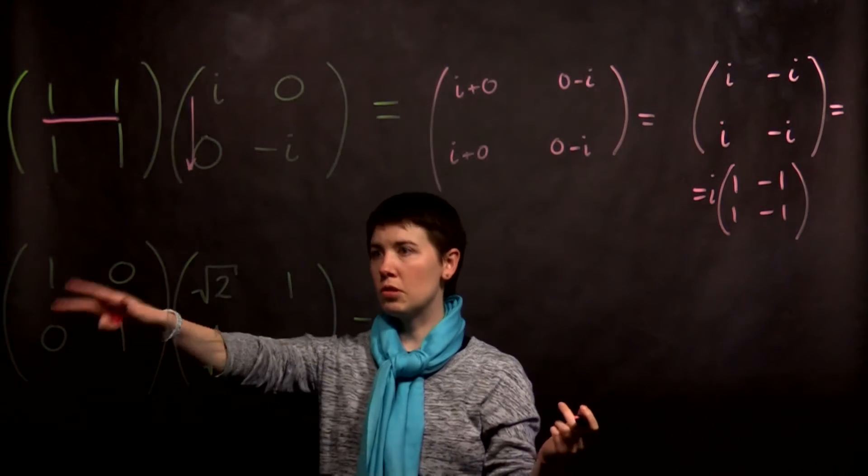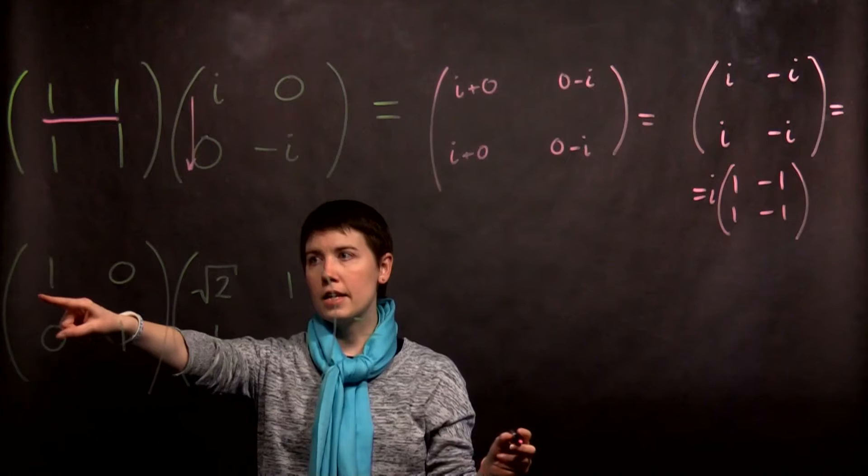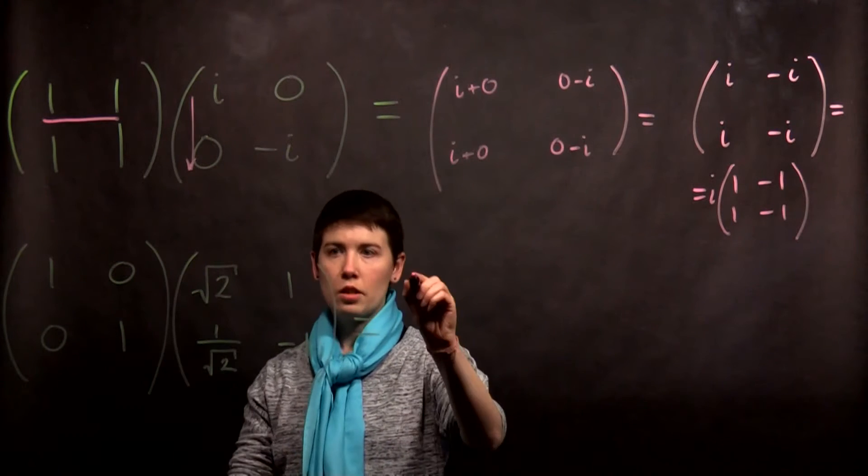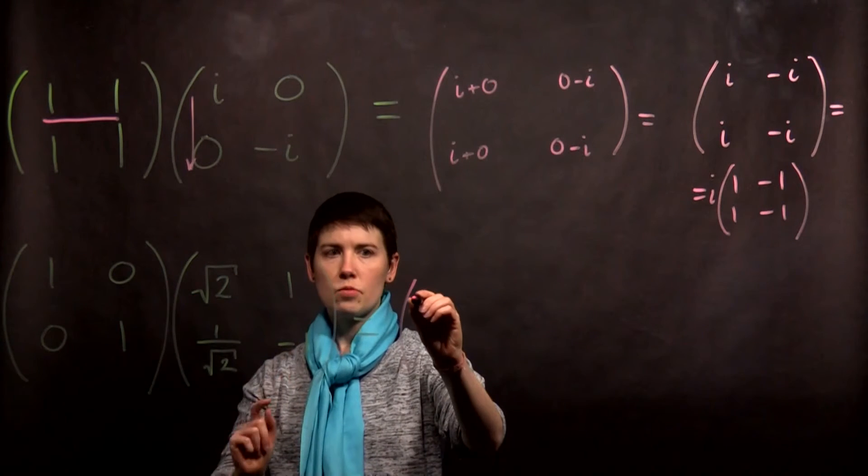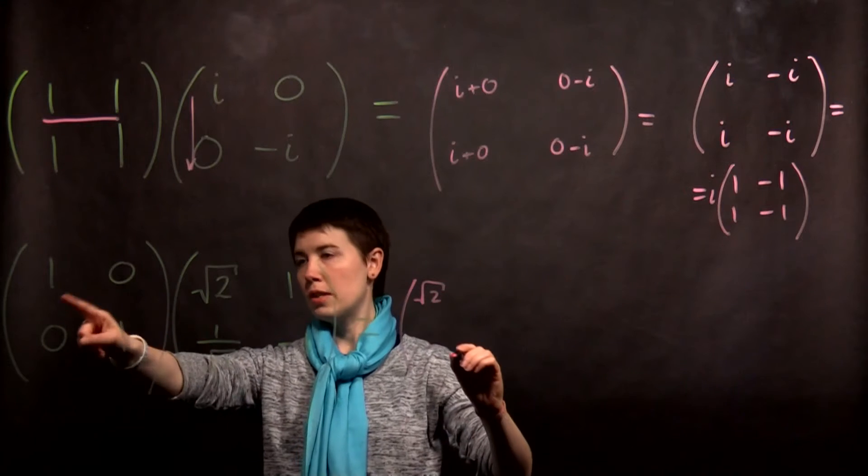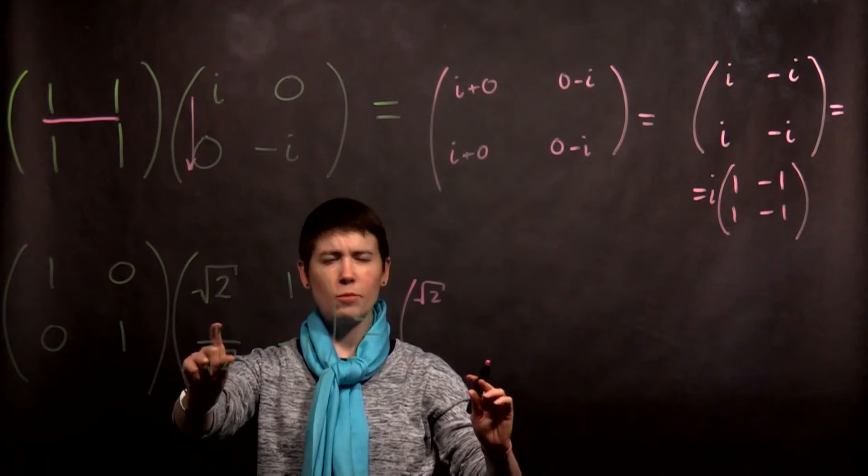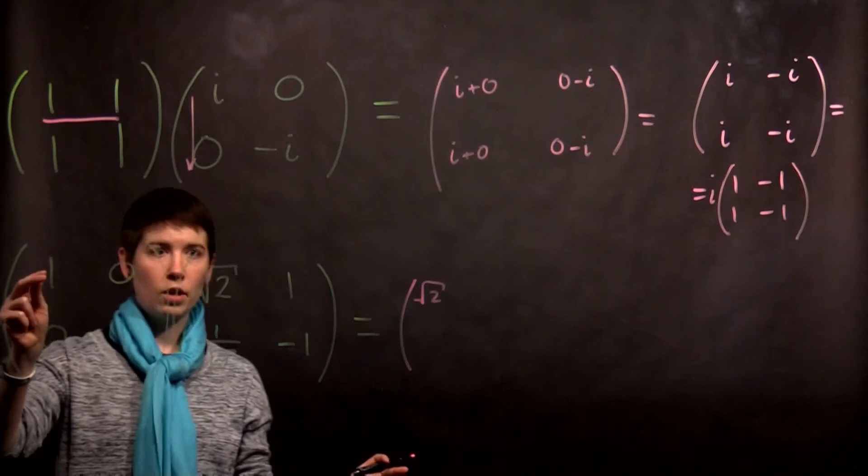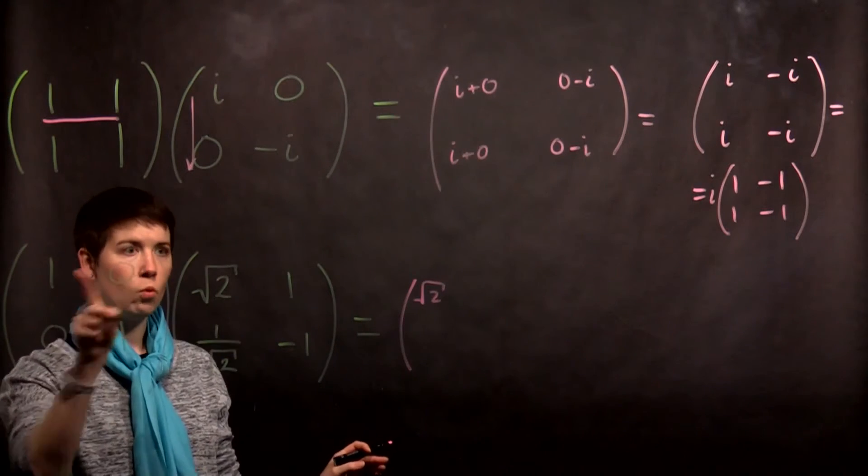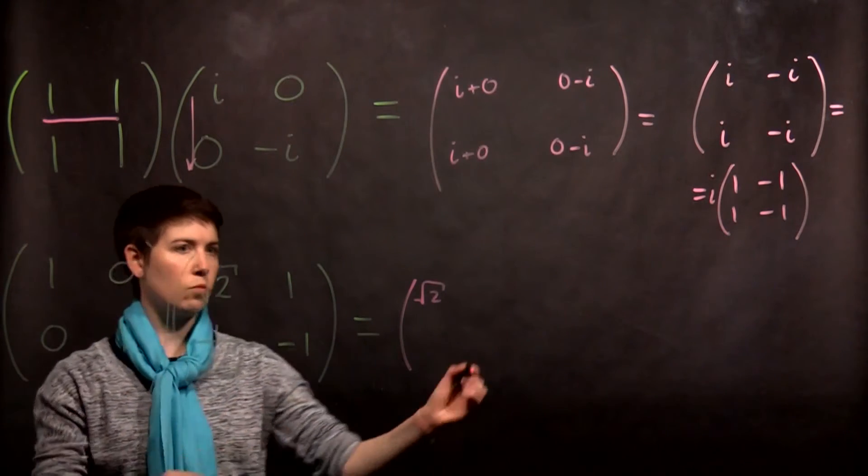So now the second case looks a little bit different. And again we're going to go row times column. So that's 1 times square root of 2 plus 0 times this. And I'm going to just leave these terms. Then we have row times column, 1 times 1, 0, negative 1.